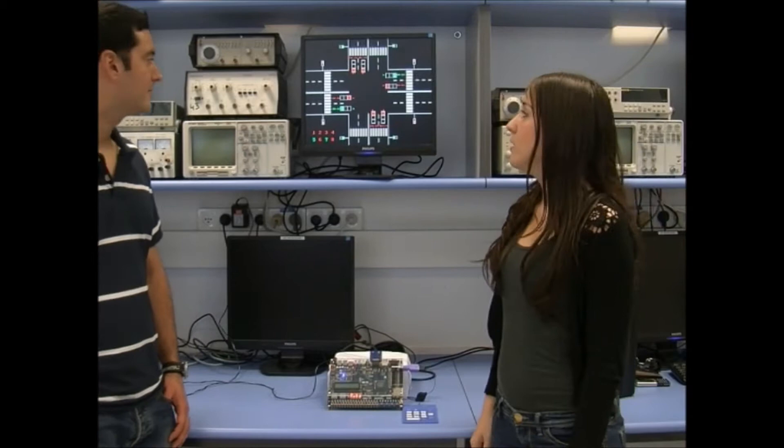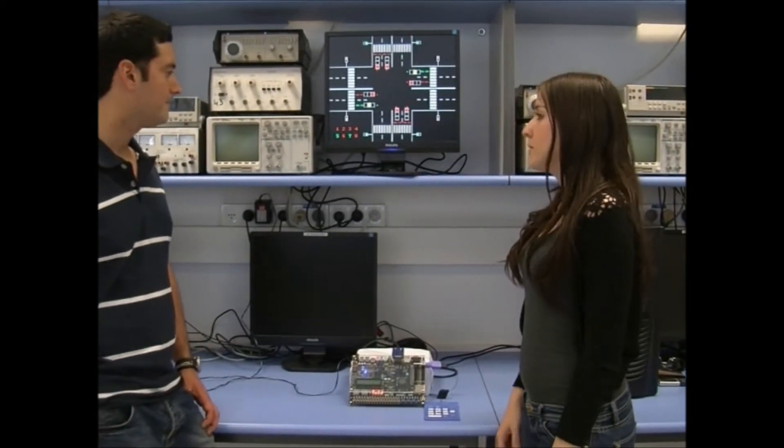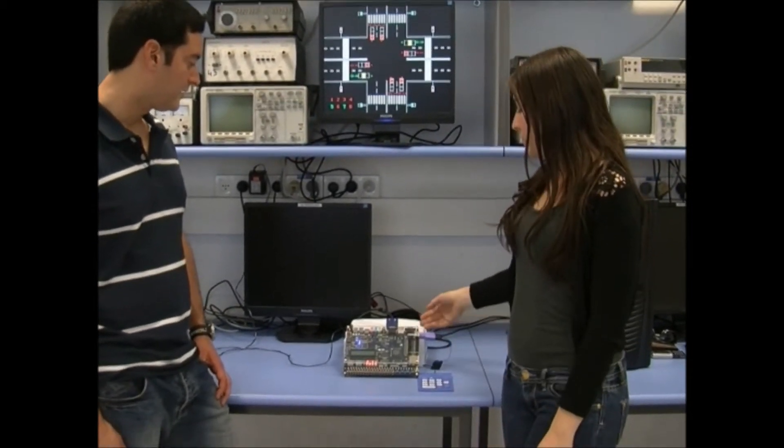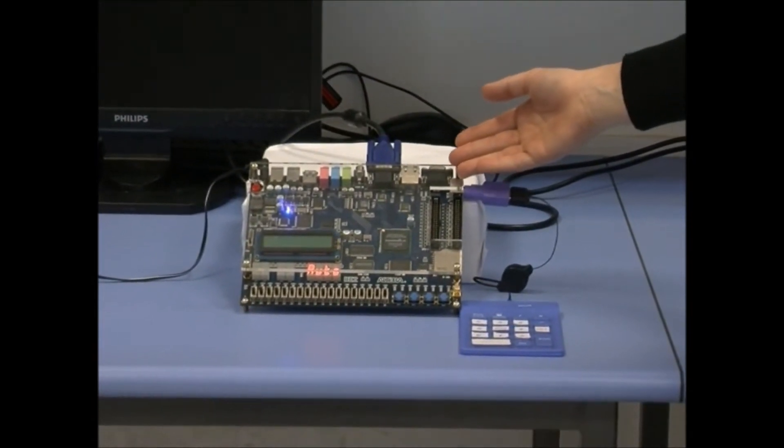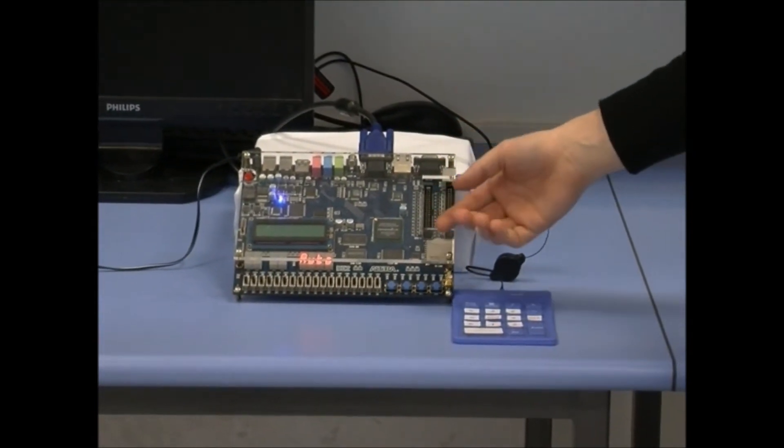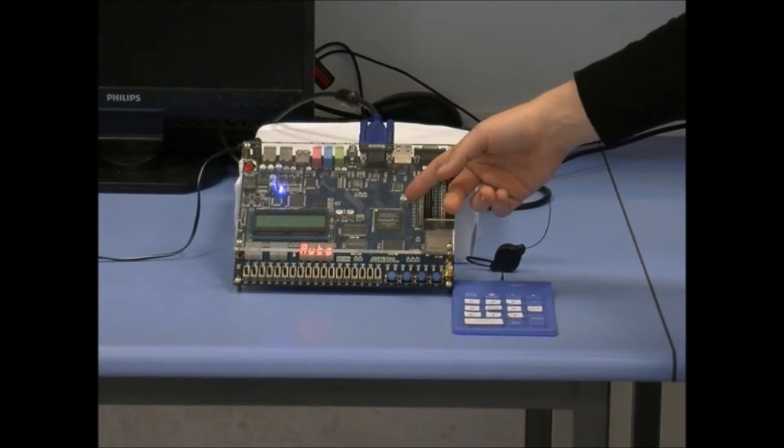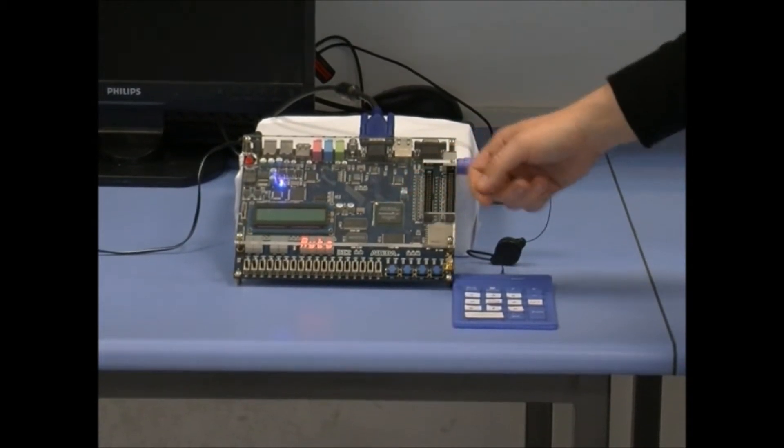Hello, I'm Adi. I'm Van. Our project is Traffic Lights Controller. In our project, we use the Altera DE2 board. We program the FPGA chip with VHDL.